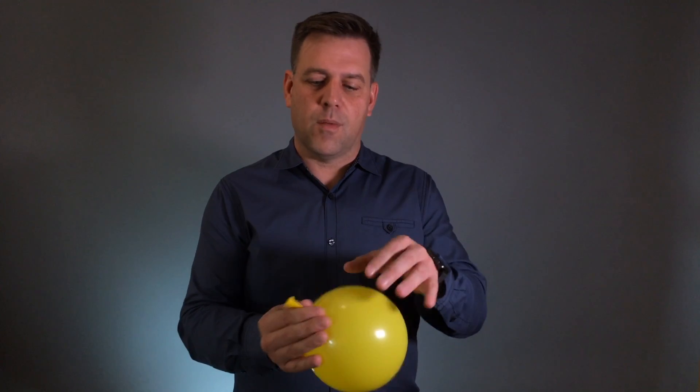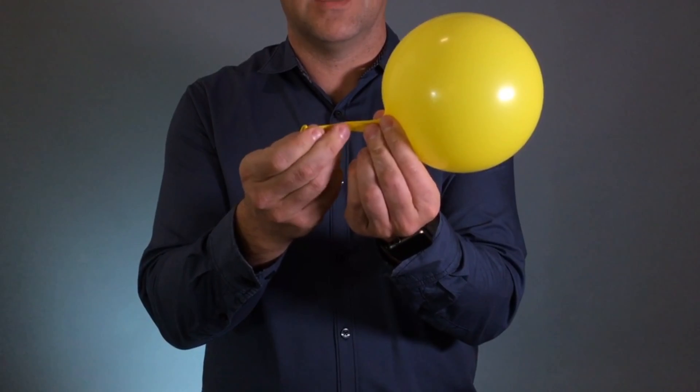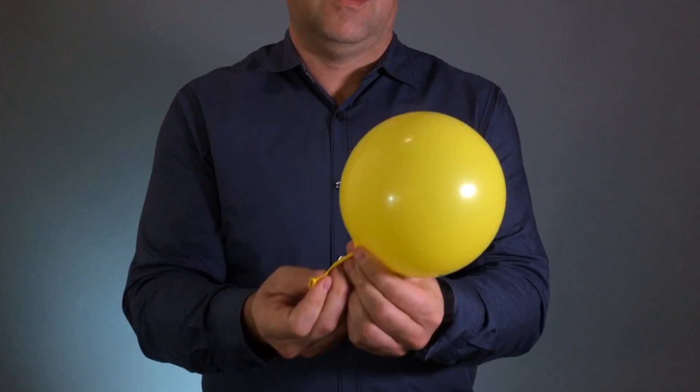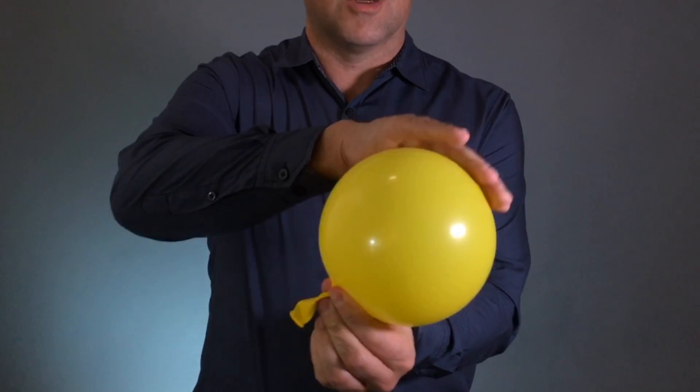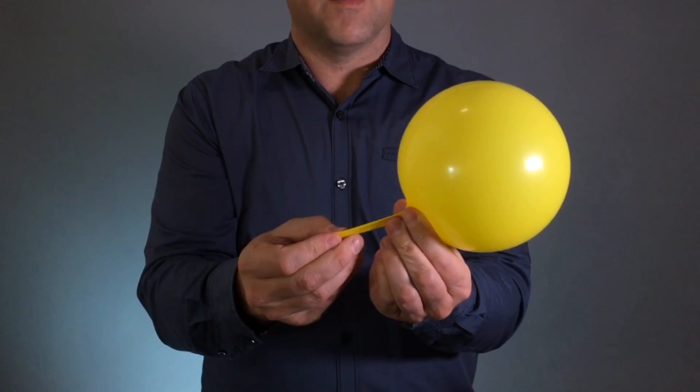So this is a kind of a representation of the Eustachian tube, and then your inner ear, your drum on the outside. Okay, so this is the function of the Eustachian tube.